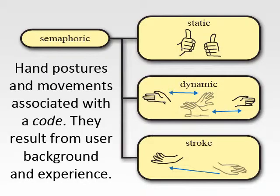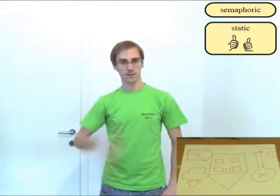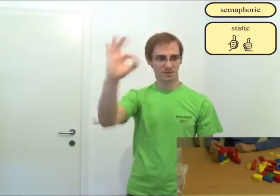Semaphoric gestures are hand postures or movements associated with specific codes which result from the user's background. Semaphoric static gestures are hand positions such as thumbs up, okay sign, stop sign, or indicating numbers.